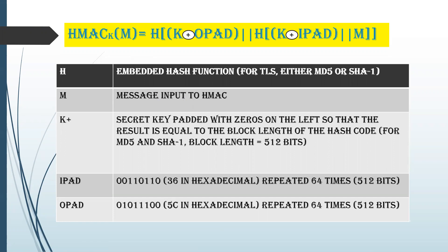TLS has different version numbers, such as version 3.6. It also uses a Message Authentication Code. The HMAC formula is: HMAC(K, M) = H(K⊕opad ‖ H(K⊕ipad ‖ M)). There is a difference between the SSL and TLS MAC schemes — the actual algorithm and the scope of the MAC calculation slightly differ. In TLS, the HMAC algorithm is used.